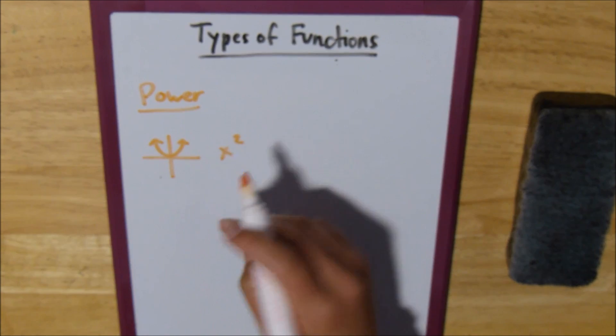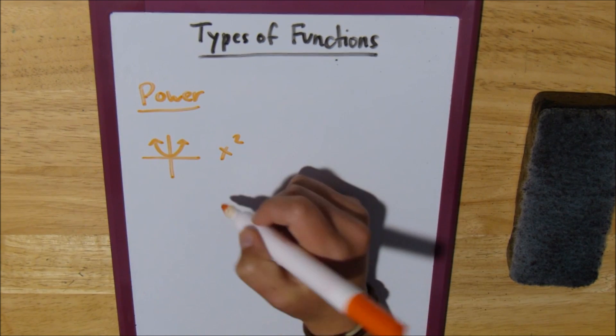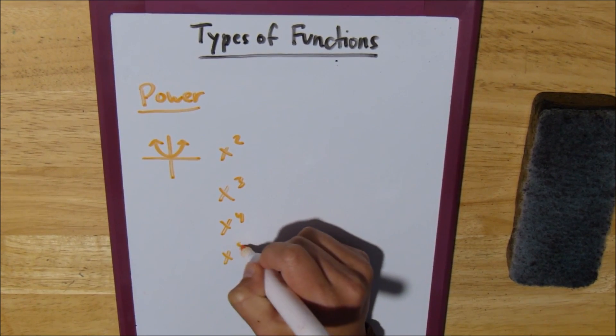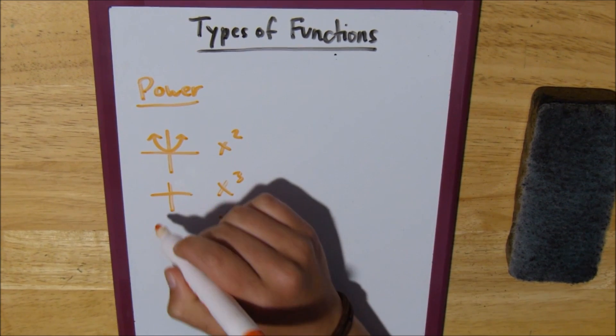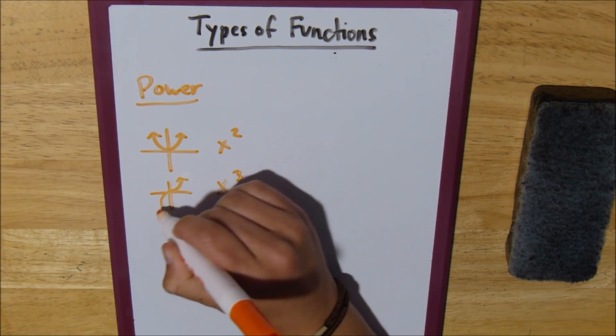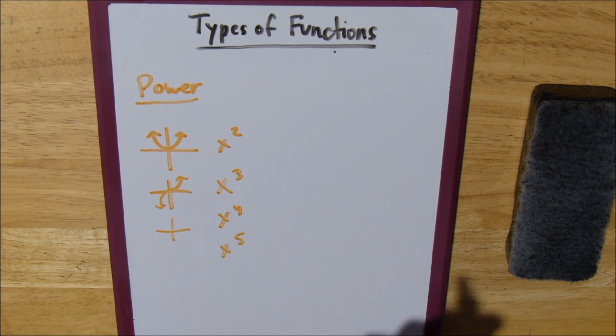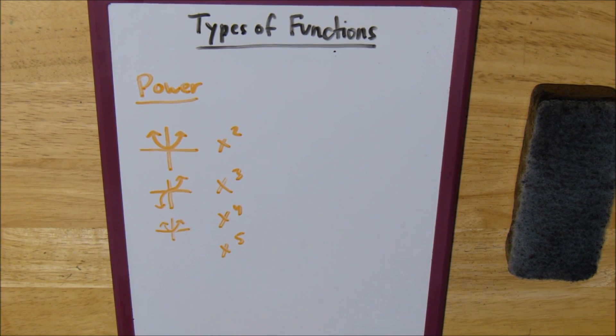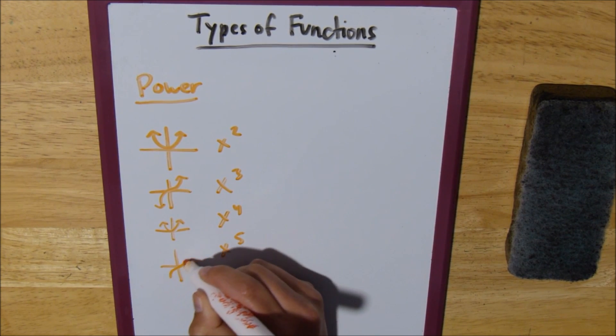But with power functions, it isn't just going to be any parabola. It can also be x cubed, x to the fourth, and x to the fifth. x to the third is a little bit different than x squared. It's got more of a squiggly shape. x to the fourth looks almost identical to x squared. It's still going to be that little u shape. x to the fifth is also going to look very similar to x to the third.